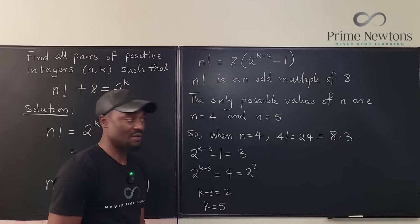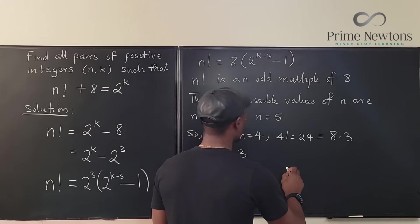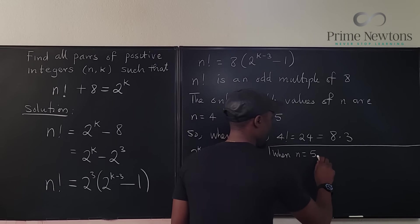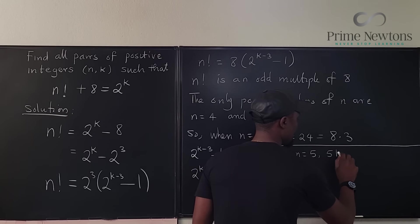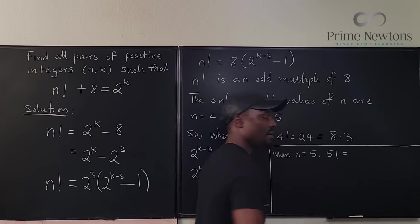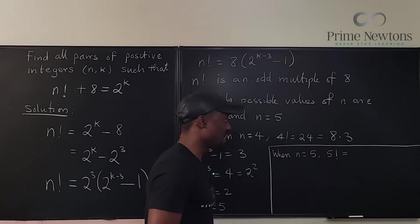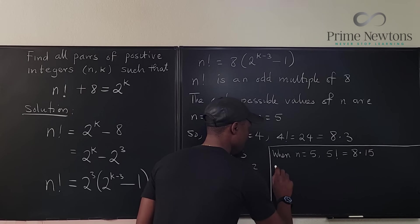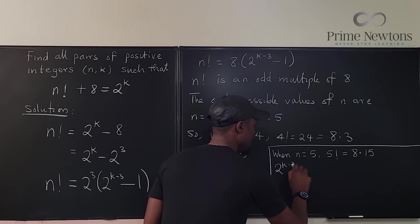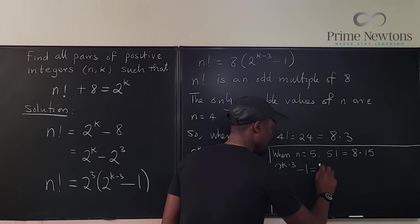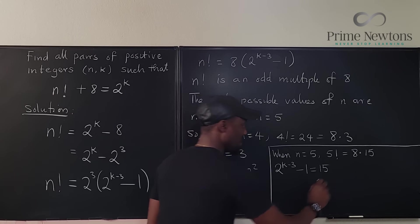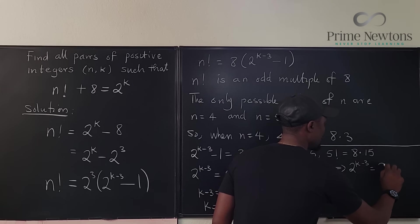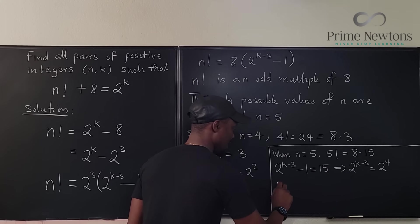So when n equals 4, k equals 5 is a solution. If we do the second part, we also know that when n is equal to 5, we have 5 factorial equals 8 times 15, which means 2 to the k minus 1 equals 15, which implies that 2 to the k minus 3 equals 16, which is 2 to the fourth, and then k equals 7 because k minus 3 is 4. That means k must be 7.